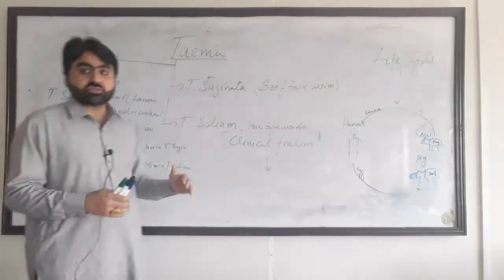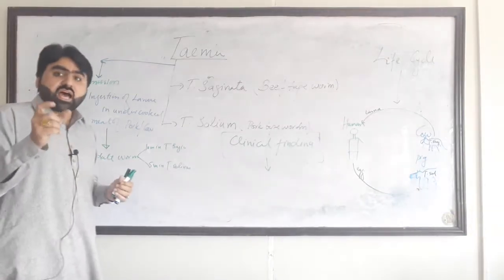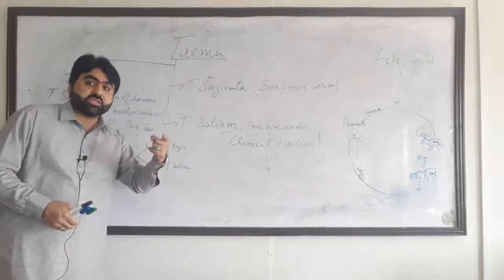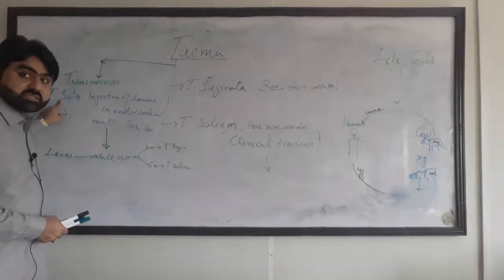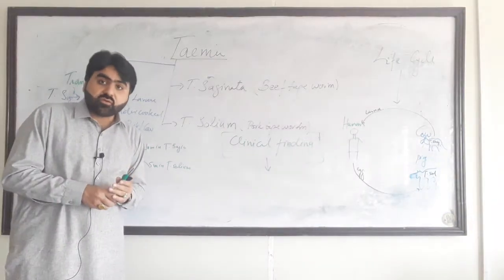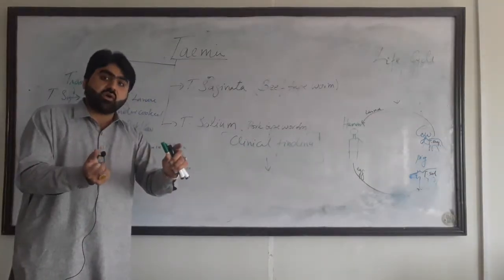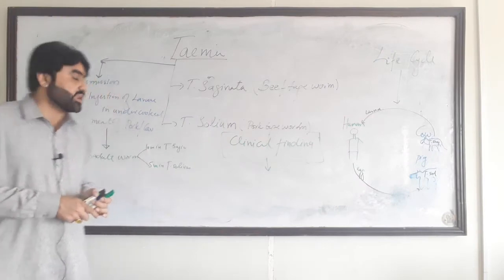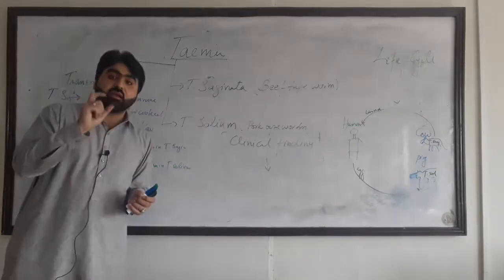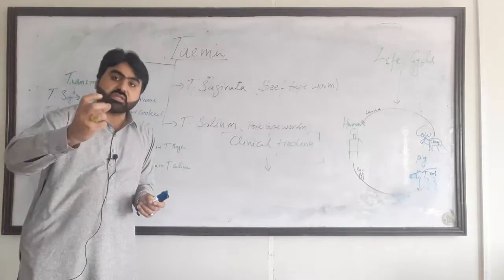The larvae of Taenia solium and Taenia saginata are present in their respective intermediate hosts. In the case of Taenia saginata, the intermediate host is cow, so the larvae is present in the muscles of the cow. While the intermediate host of Taenia solium is pig, so the larvae of Taenia solium will be present in the muscles of the pig.